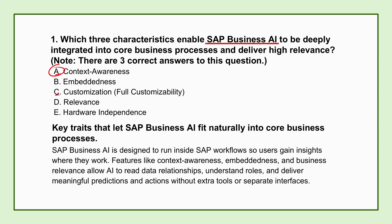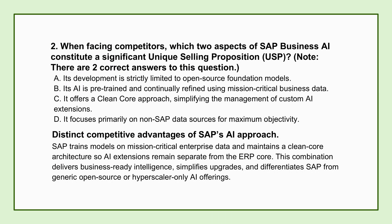That's a powerful combination: context, embeddedness, and relevance. When you look at the wider market — especially with big hyperscalers pushing their own AI — what's SAP's core unique selling proposition? There are two major strategic differentiators. The first is about the input data: this AI is pre-trained and continually refined using mission-critical business data. SAP has access to decades of proprietary, high-quality, normalized business data from companies running the global economy.